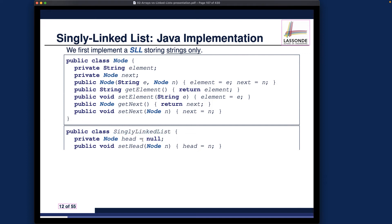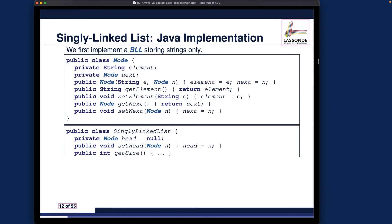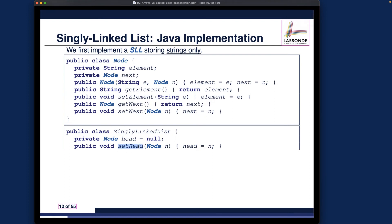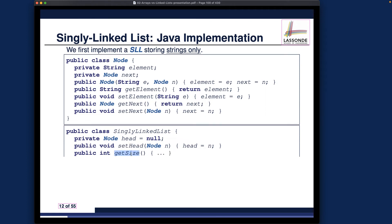When you don't explicitly declare a constructor, Java provides a default one that initializes all attributes to their default values. For the SinglyLinkedList, we have a mutator for head, and we should also have an accessor. The available methods include: getting the size, getting the tail (which returns a Node), and adding an element stored as a string.